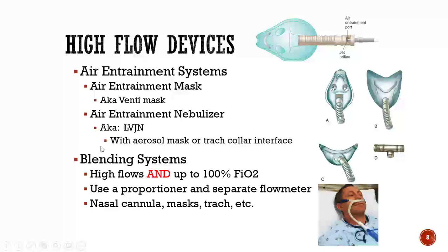You'll also look at blending systems — the O2 blender. In some hospitals that have only one source gas, it's an oxygen blender that entrains its own room air. The flow meter can go up to 75 liters per minute or higher, and the proportioner can be set from 21% all the way up to 100%. Interfaces include high flow nasal cannulas, masks, and trachs.